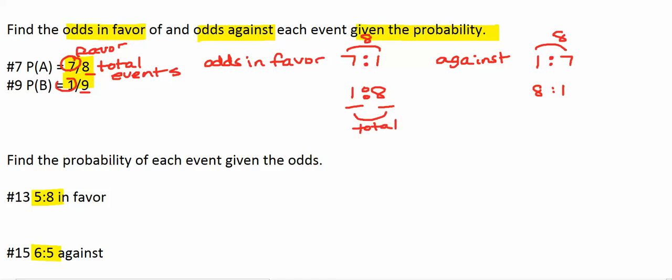So now let's look at where we have odds and we want to find the probability. So when I do my probability, I need to do a fraction and I want my total events to go in the denominator and I want my events in favor to go on top. So if the odds are 5 to 8 in favor, that means there's 5 in favor to 8 against. So my total events would be 5 plus 8 or 13 total. So my probability that this event will happen is 5 chances out of 13.